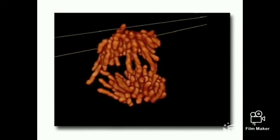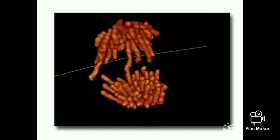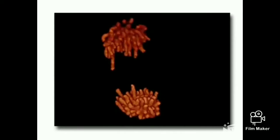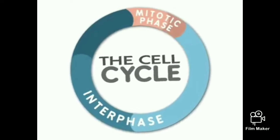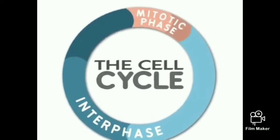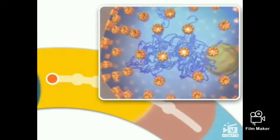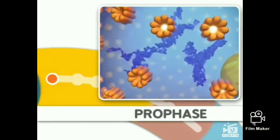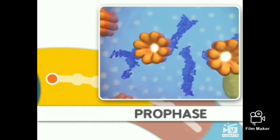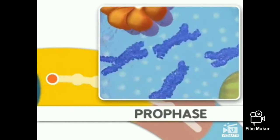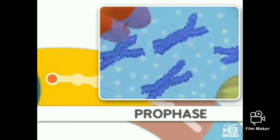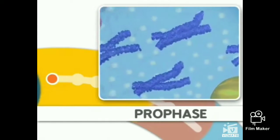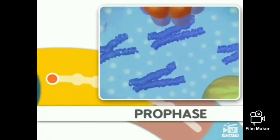Mitosis is the process of dividing the duplicated DNA of a cell into two new nuclei. Mitosis is split into distinct stages. The first stage is prophase, where the DNA condenses, organizes, and the classic chromosome structure appears.